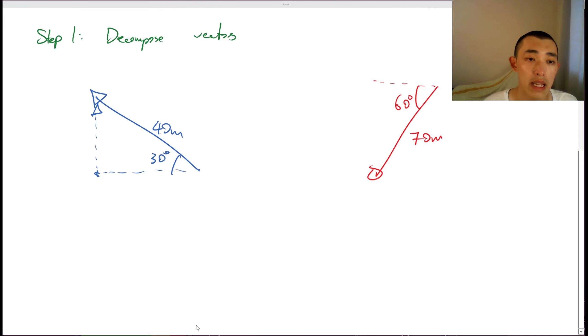I can say that this is my adjacent, this is my opposite, and this 40 is my hypotenuse. I can say that sine 30 is equal to opposite over hypotenuse. Opposite is equal to 40 sine 30. I could leave it as 40 sine 30, or I could also convert it into a decimal. It doesn't matter. 20 meters.